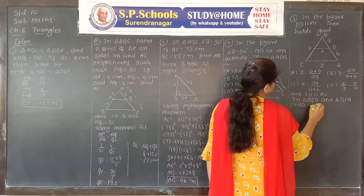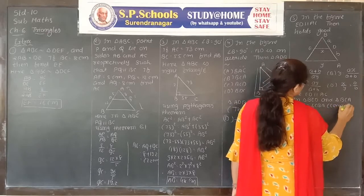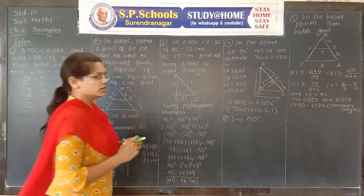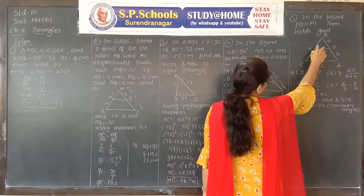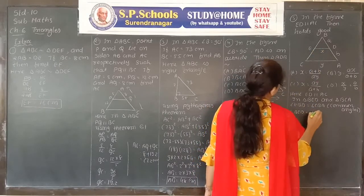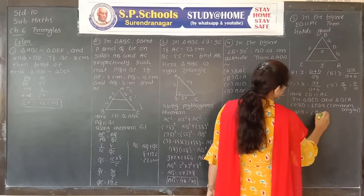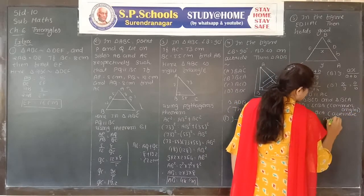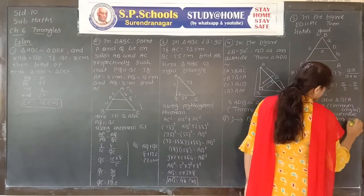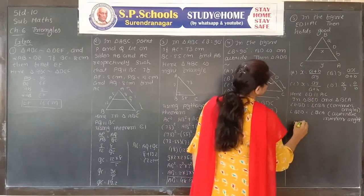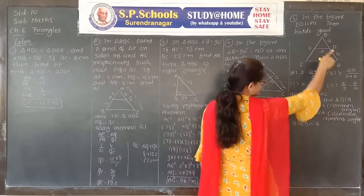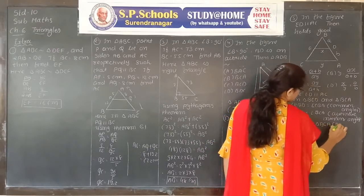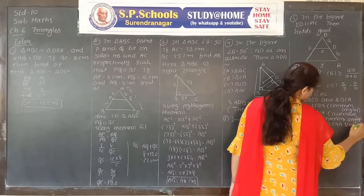Also, angle BED equals angle BCA because of alternate interior angles. Therefore triangle BED is similar to triangle BCA by the AA similarity criterion.